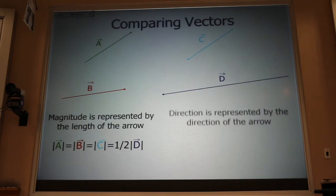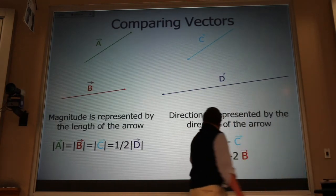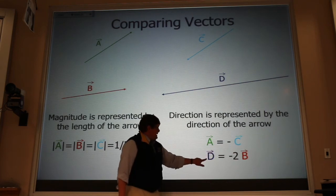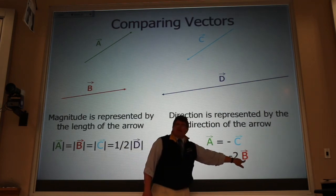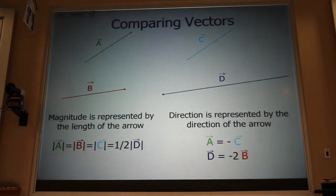What about the direction? The direction I see, A is in the opposite direction of C, and D is in the opposite direction of B. And so that minus sign is what reverses the direction.